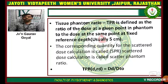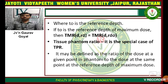TPR, Tissue Phantom Ratio, is defined as the ratio of the dose at a given point in the phantom to the dose at the same point at a fixed reference depth, usually 5 cm. The corresponding quality for scattered dose calculation is called Scattered Phantom Ratio (SPR). TPR(d, r_d) equals D(d) divided by D(T0), where T0 is the reference depth.